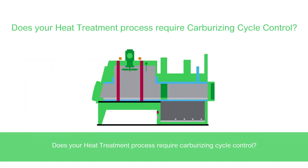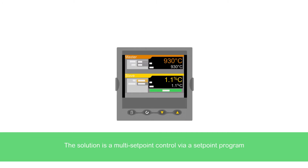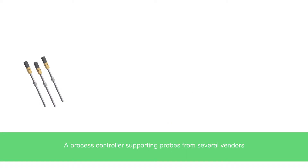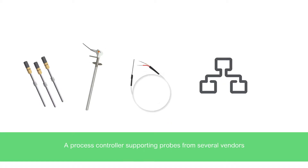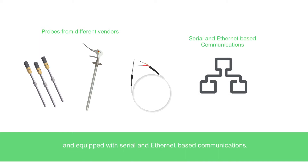Does your heat treatment process require carburizing cycle control? The solution is a multi set point control via a set point program for temperature and carbon control loops. A process controller supporting probes from several vendors and equipped with serial and ethernet based communications.